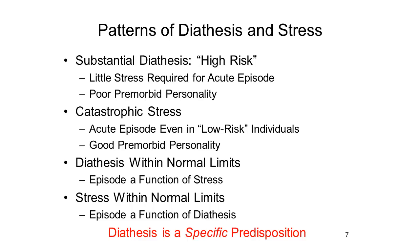Remember, the diathesis factors are specific to particular forms of mental illness. In theory, some particular diathesis predisposes an individual to schizophrenia, but other diathesis would be relevant to things like depressive disorder, anxiety disorder, and the like. So if stress precipitates an acute episode of mental illness, that illness will take a specific form that's determined by the diathesis.